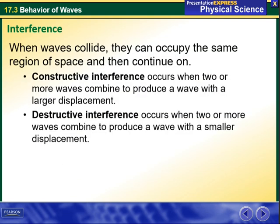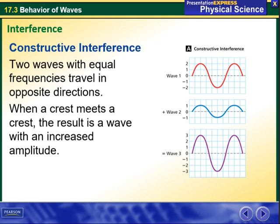By definition, constructive interference occurs when two or more waves combine to produce a wave with a larger displacement. As the figure right here shows, I have constructive interference. This is my first wave and this is my second wave. As you can see here, once those two waves are combined together, the amplitude increases. Two waves with equal frequencies travel in opposite directions. When a crest meets a crest, the result is a wave with an increased amplitude. This is also here for the troughs.